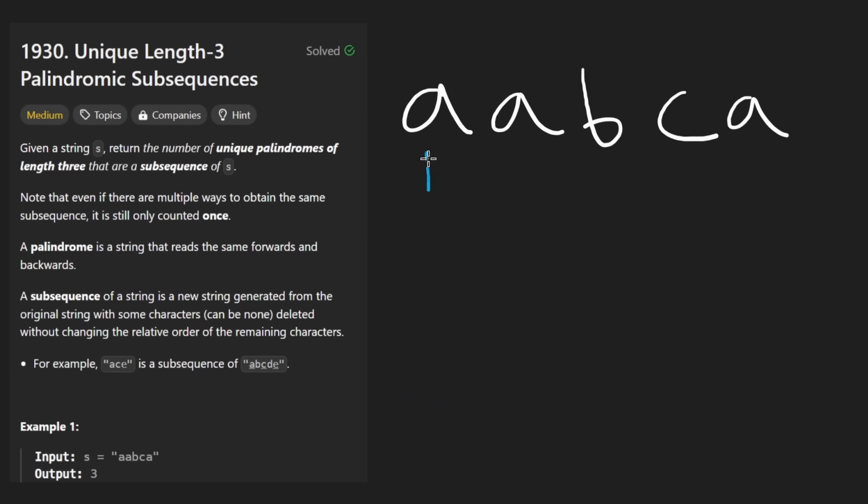Like for example, I have one pointer which will start here. I'll have another pointer which will start after that and then another pointer that will start after that. Because having triple nested loops, we can still guarantee that the relative order will be the same.